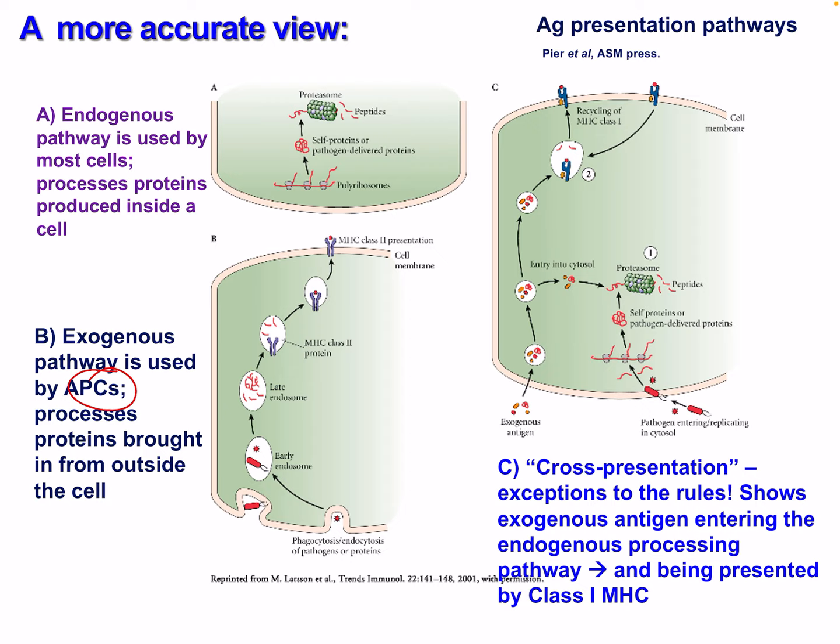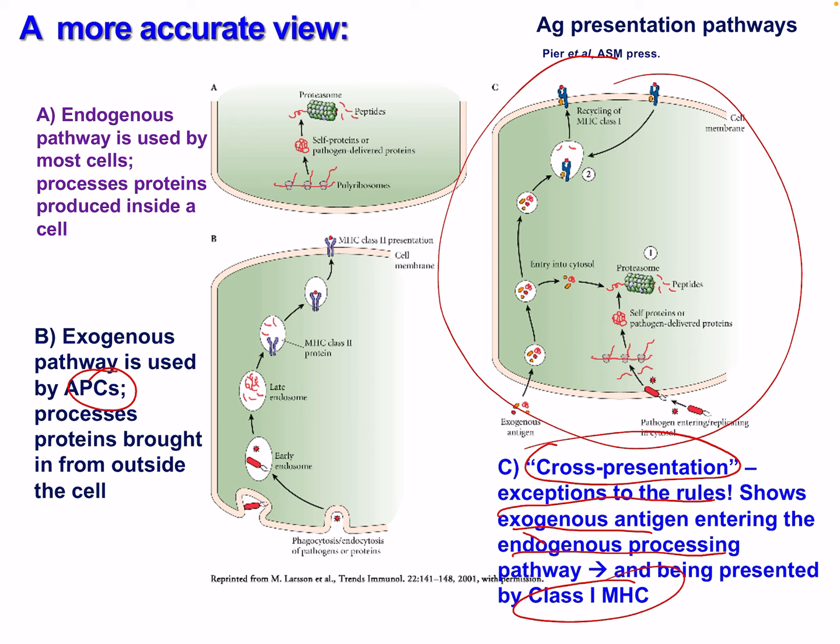We also have cross-presentation, which is an exception to the rule — this shows exogenous antigen entering the endogenous processing pathway and being presented by class 1 MHC. It is a unique system.